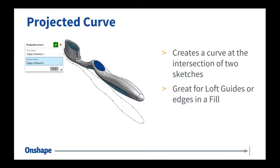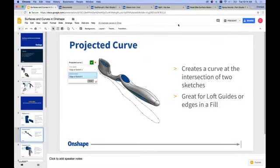The next tool on my list is projected curve. Essentially, projected curve creates a 3D curve at the intersection of two 2D sketches. It's very useful for loft guides and for edges in a fill — it has the same kind of use cases as bridging curve in that it allows you to easily define a three-dimensional boundary. The way I would think of projected curve is: if you take one sketch and extrude a surface, and take another sketch and extrude a surface, right where they intersect, that three-dimensional curve is the projected curve.